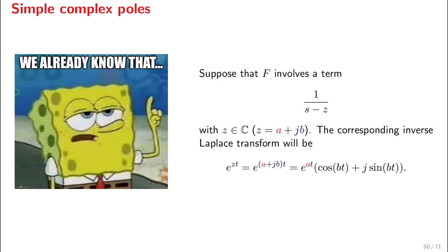Let's suppose that our rational function F has a pole z. z might be real, but in general it can be complex, a + jb. The corresponding inverse Laplace transform is an exponential function: e^(zt), so e^((a + jb)t). But we know very well that using Euler's formula, this can be written with a cosine and a sine.